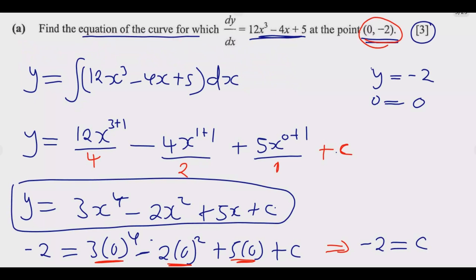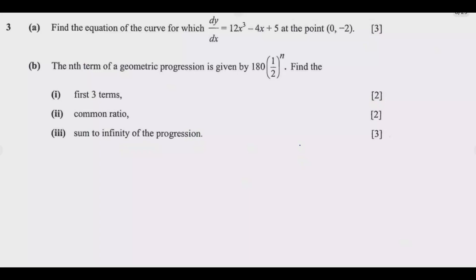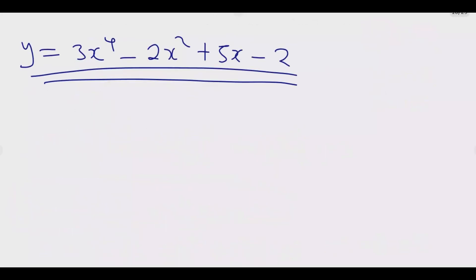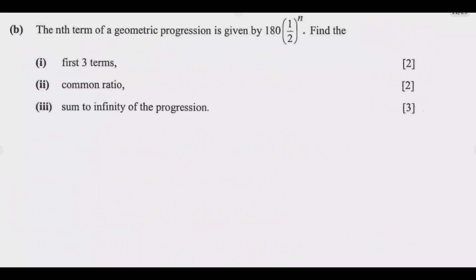Let us move to B which is the geometric progression so that we also answer that one. We are told that the nth term of the geometric progression is given by this. We need to find the first three terms. So this is (i). So what it means is Tₙ equals 180(1/2)^n.